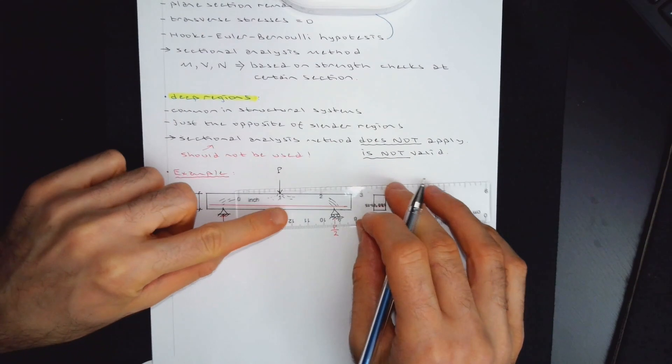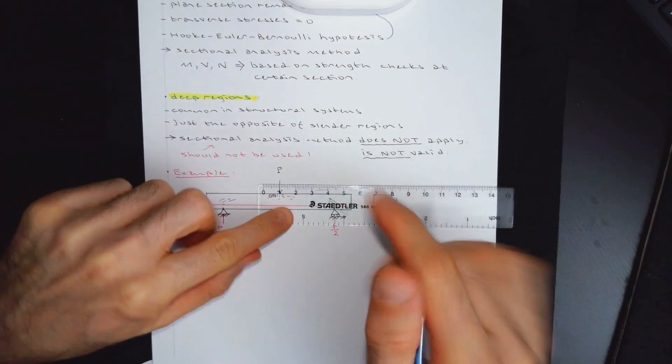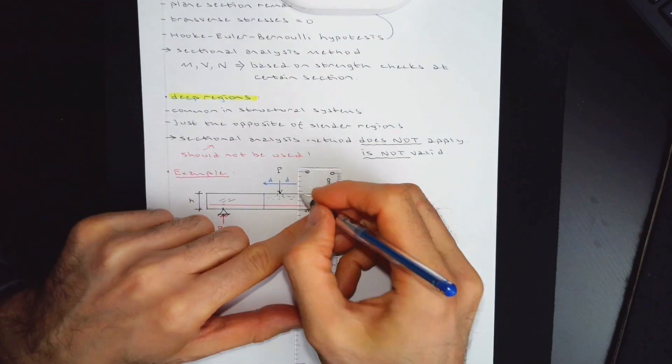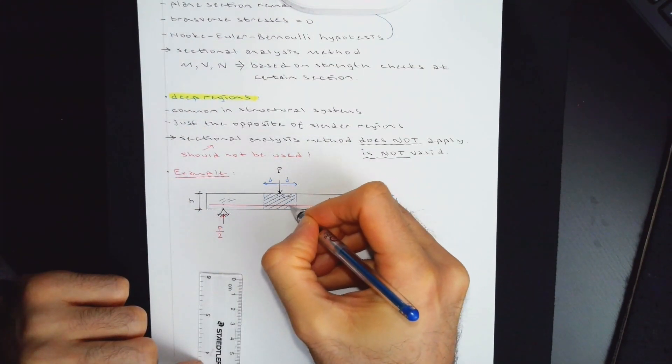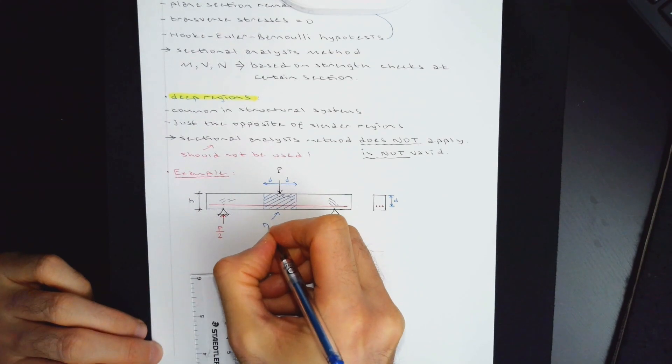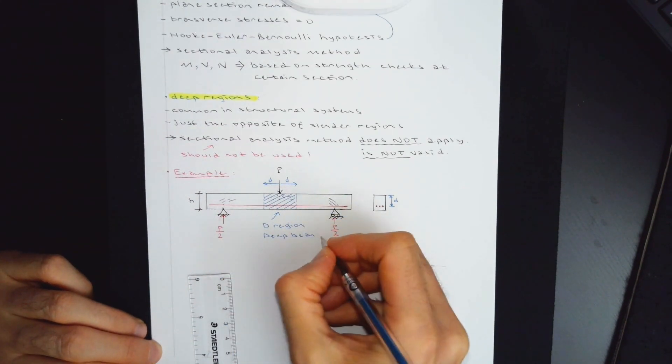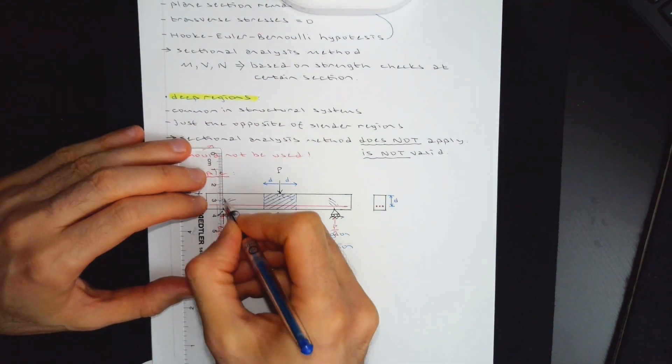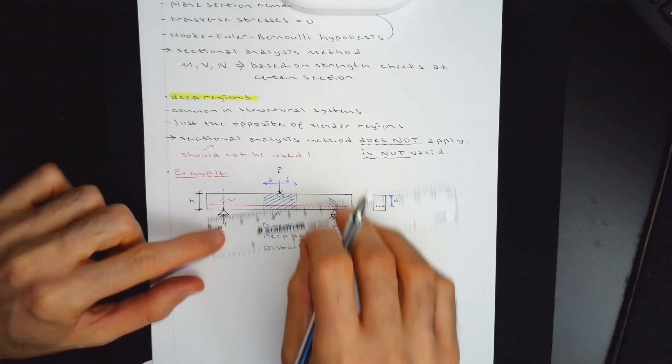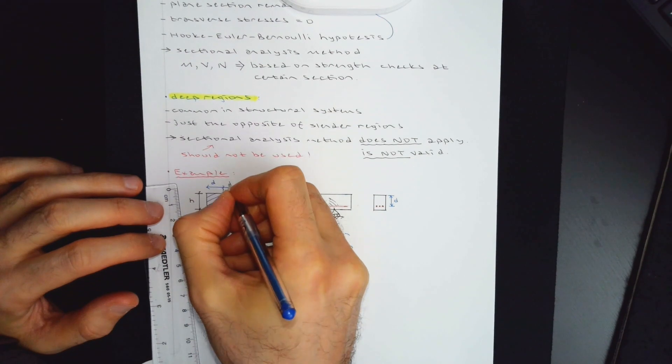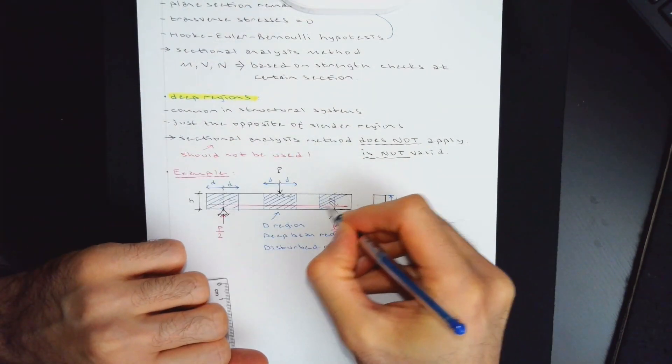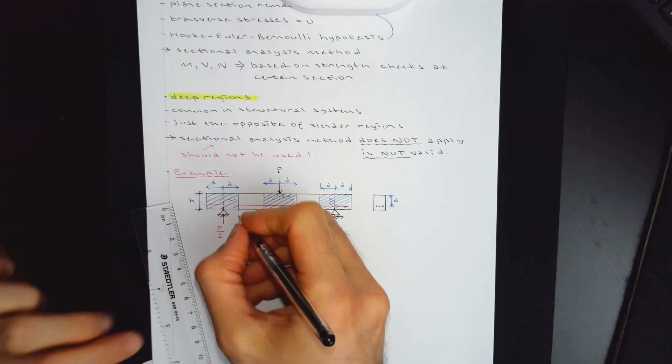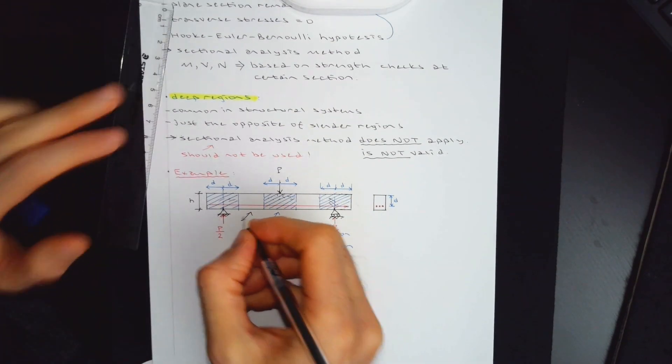There is going to be some local disturbances in these regions that would invalidate this transverse stresses zero assumption as well as it would invalidate plane sections remain plane assumption. These are the local regions which are going to be deep regions. What you need to do if you have a point load, you just need to go d away from the point load in both directions and this is going to be your disturbed region. It's a local region in which you are introducing the load. This is called d region. Call this d beam region or call this disturbed region. Same applies here from the point load application.